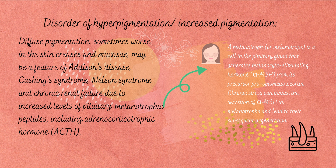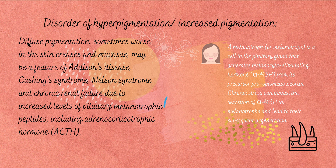Diffuse pigmentation, sometimes worse in the skin creases and mucosa, may be a feature of Addison's disease, Cushing's syndrome, Nelson's syndrome, and chronic renal failure, due to increased levels of pituitary melanotropic hormones including adrenocorticotropic hormone (ACTH).